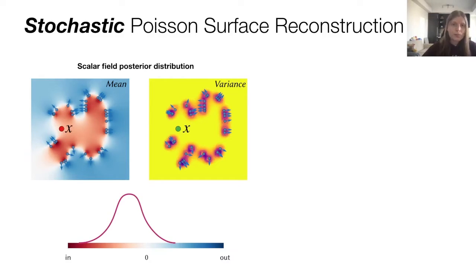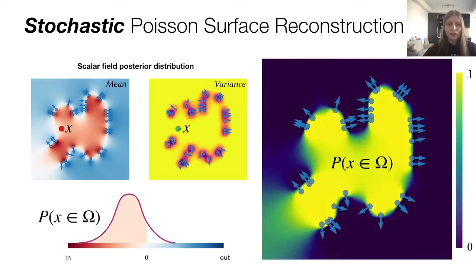This statistical formalism lets us compute important queries about different points in space. For example, we may want to compute this integral, which is nothing but the probability of the scalar field's value being below or equal to zero. But recall that in this Poisson reconstruction scalar field, being below zero just meant being inside the reconstructed object. So this quantity is the probability of any given point in space being inside the shape.